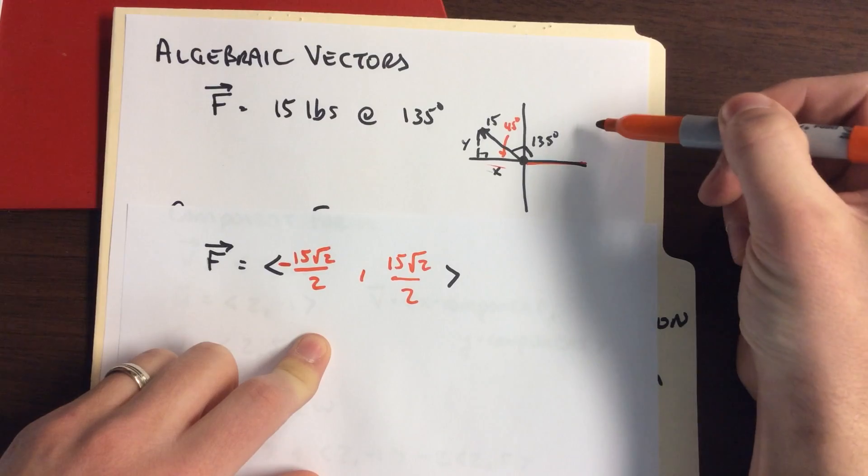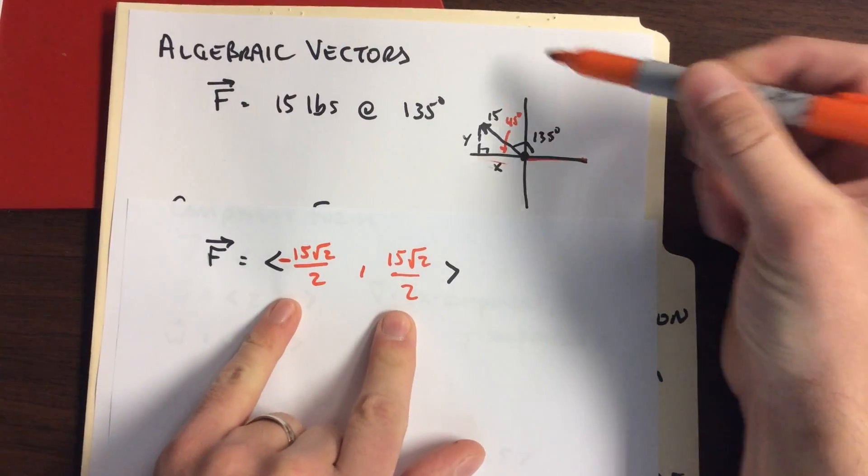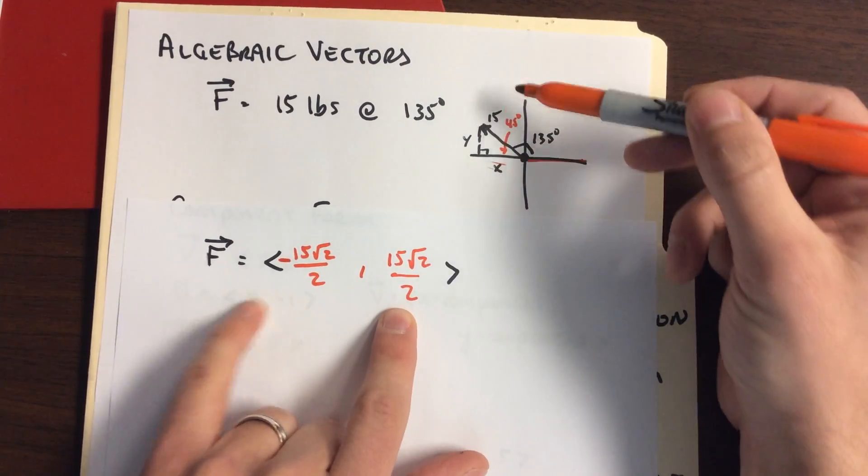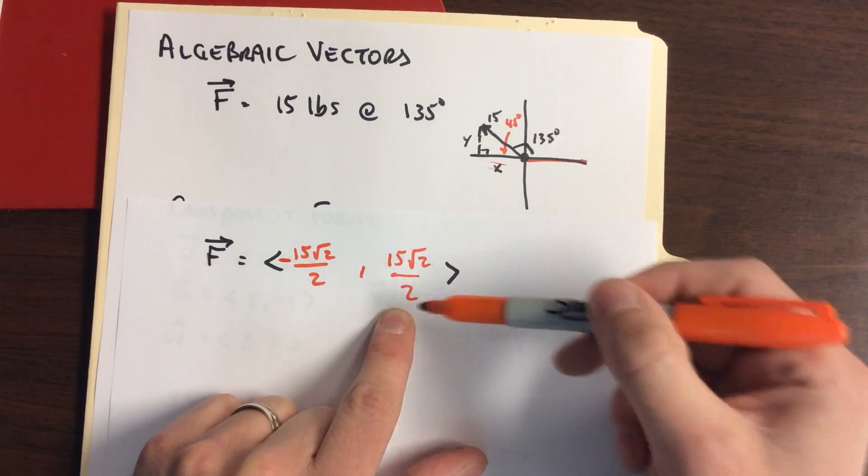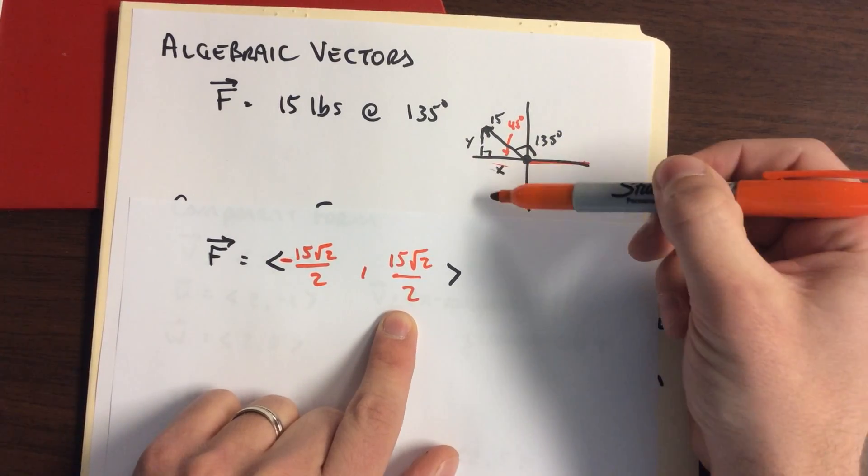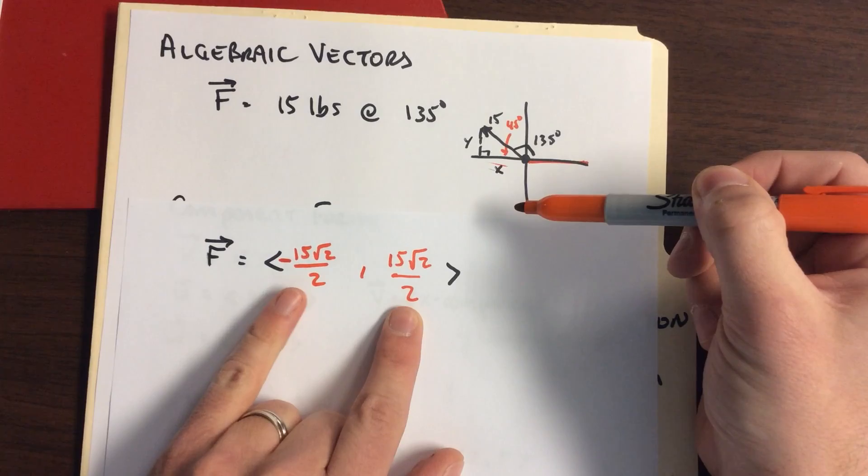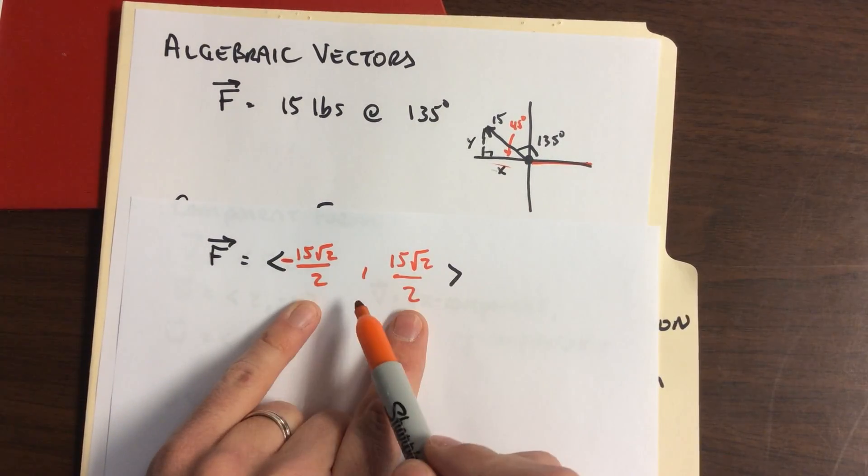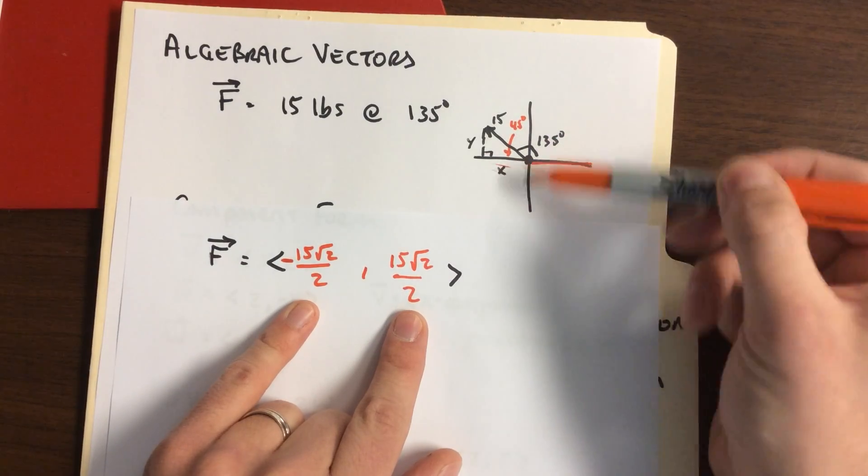Quadrant 1, which components are going to be positive? Both. Quadrant 2, what component's going to be positive? Sine. So in terms of the vector, which component? The y. Quadrant 3, which component will be positive? Tangent's going to be positive. So x and y are going to be negative in quadrant 3.